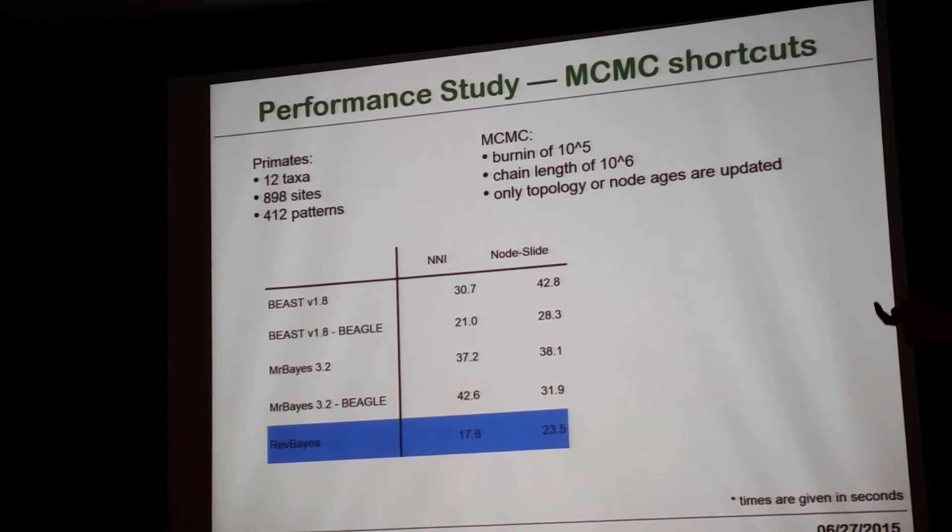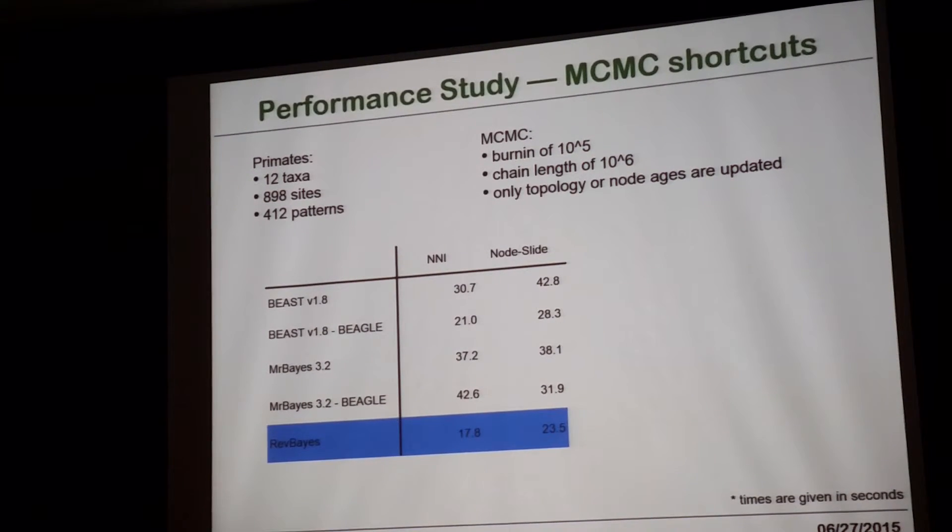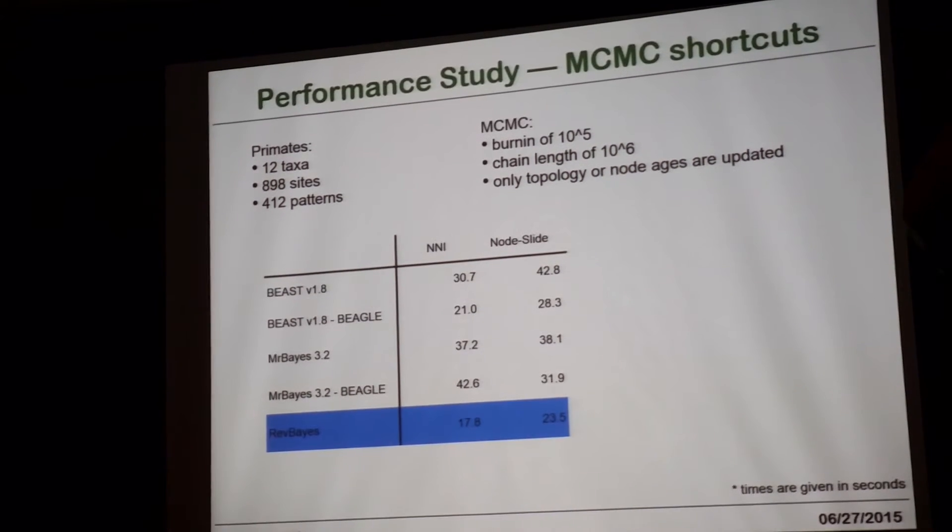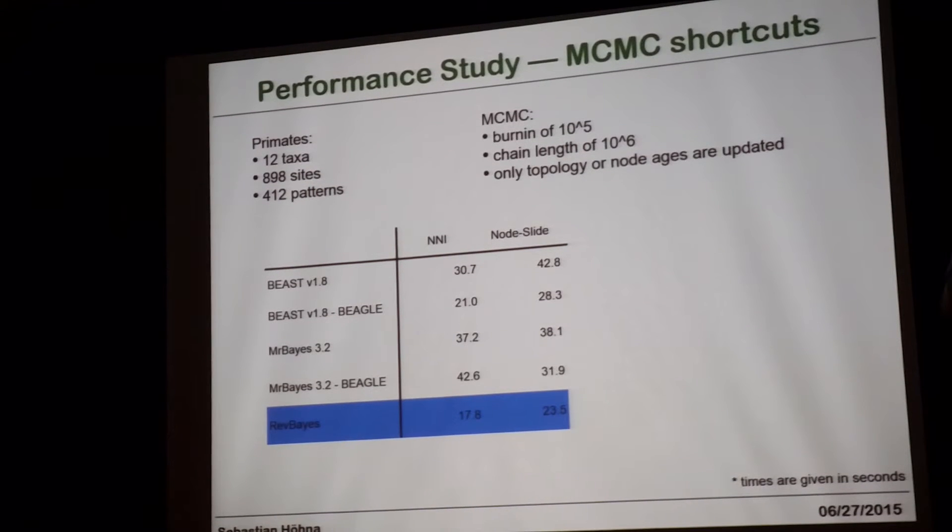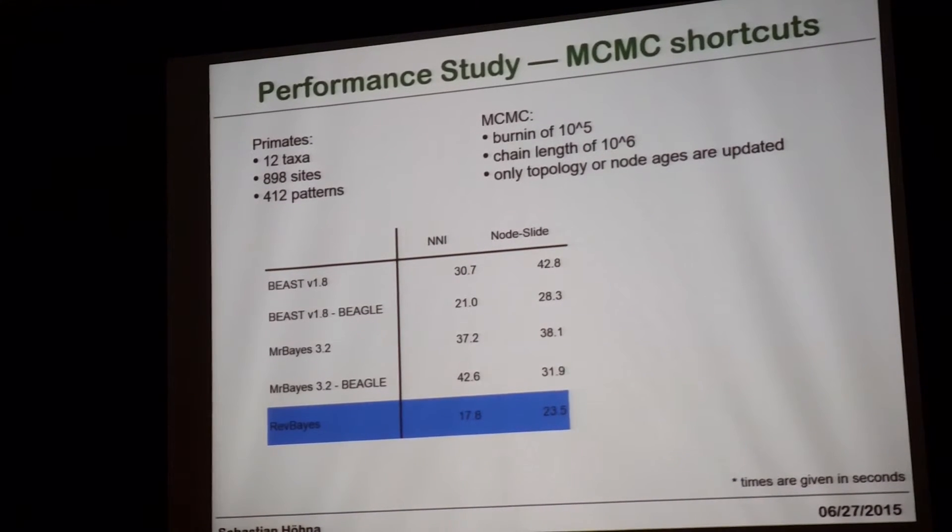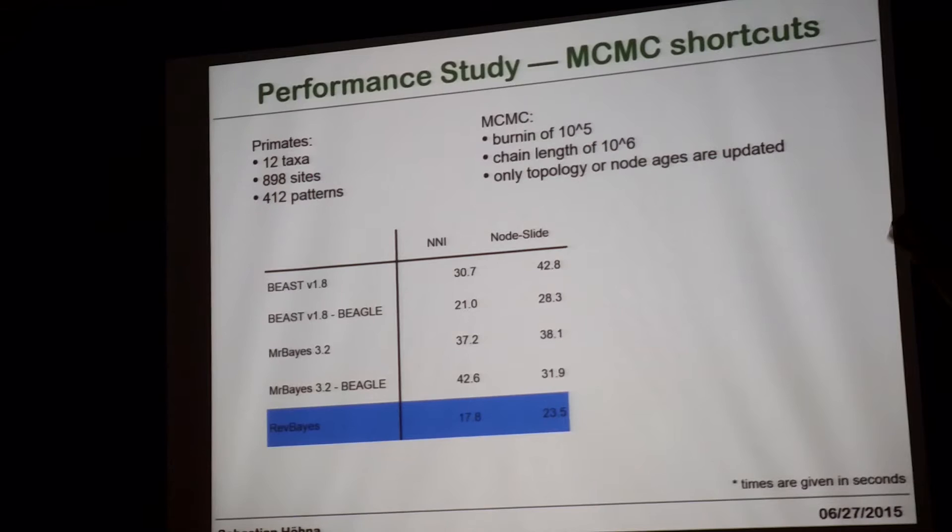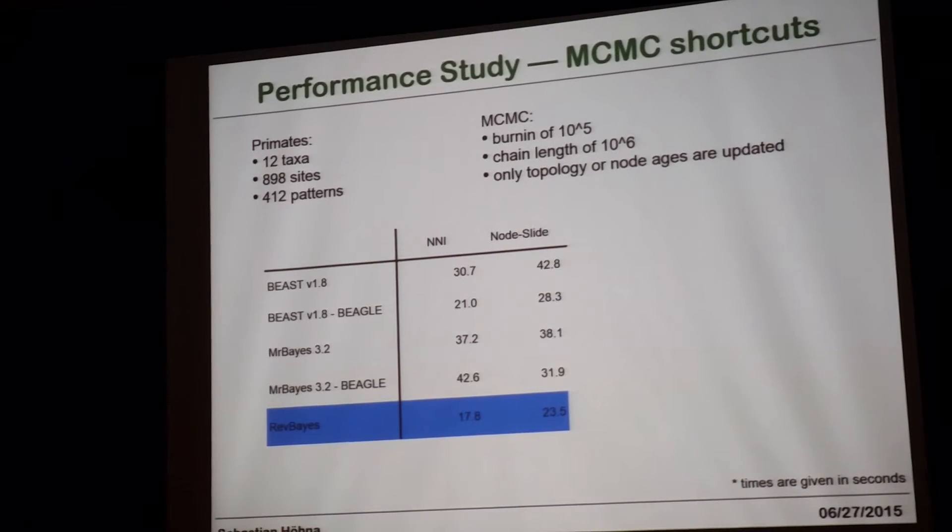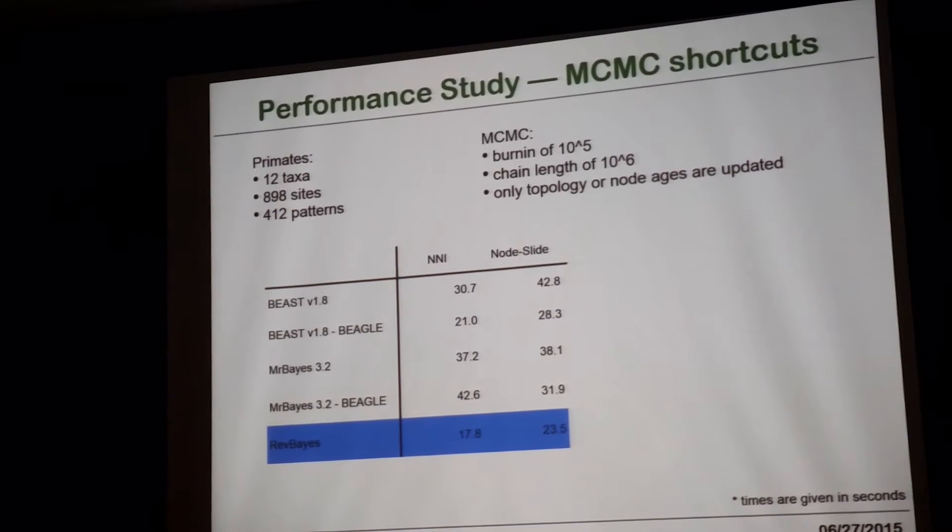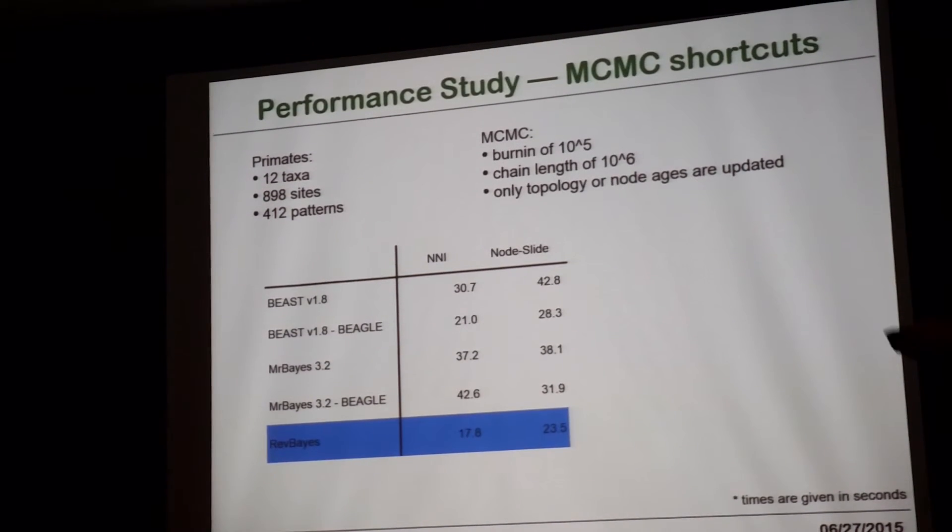Similarly, the second performance study that you can do is you can look at Bayesian statistics software by seeing how good is it in using shortcuts in the MCMC, because if you only change a small part in the tree, you don't need to recompute the entire tree likelihood. You just need to recompute small parts of it. And RevBayes actually does a pretty good job in recomputing all these small parts and even outperforms in that little example BEAST using Beagle. I don't want to say that RevBayes is really much faster than BEAST or anything, so the take-home message here should be that RevBayes performs in the same ballpark as other software, and you don't need to be concerned that it's slower and you're losing anything just because of the flexibility.